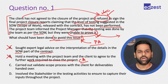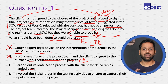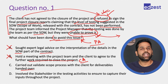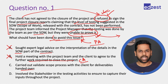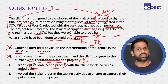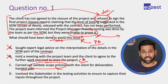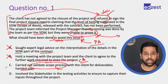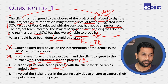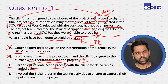Option C: carried out the validate scope process with the client for deliverables handed over. Validate scope process means getting deliverables checked with the customer, getting it signed off and recorded. If you had followed the validate scope process properly, the team would have been able to prove it, because the process ends with a document that could be shown to the customer. This would have helped in avoiding the issue. But is it the best option? Let us see D first.